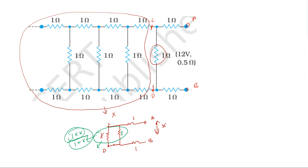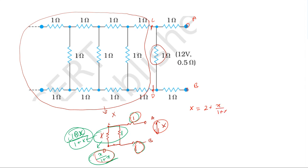So the total resistance X is equal to 2 plus X divided by one plus X. Cross-multiplying: X into one plus X is equal to two plus X.